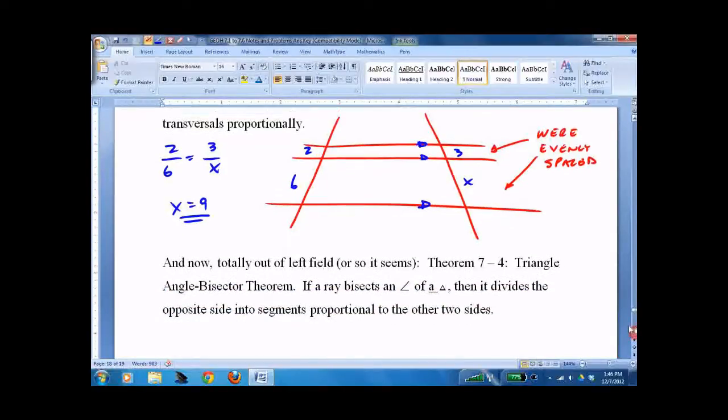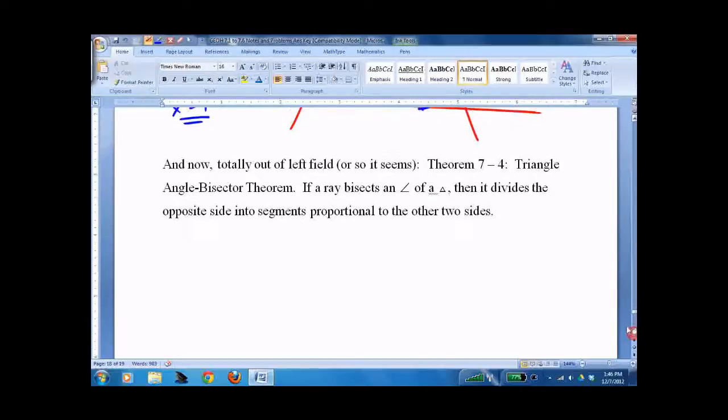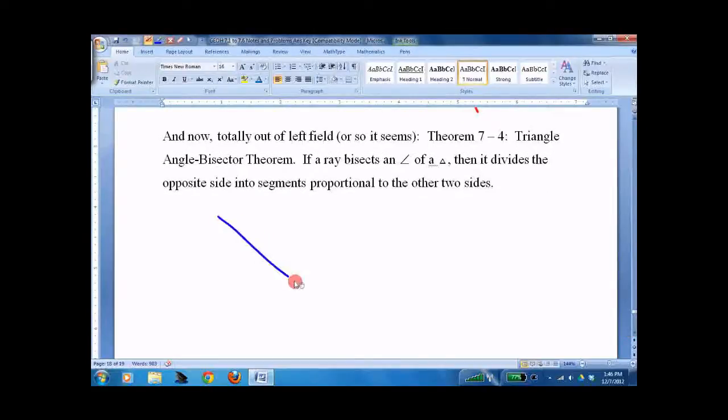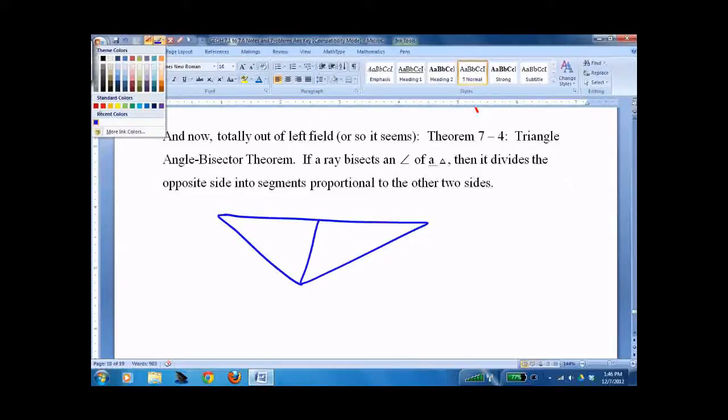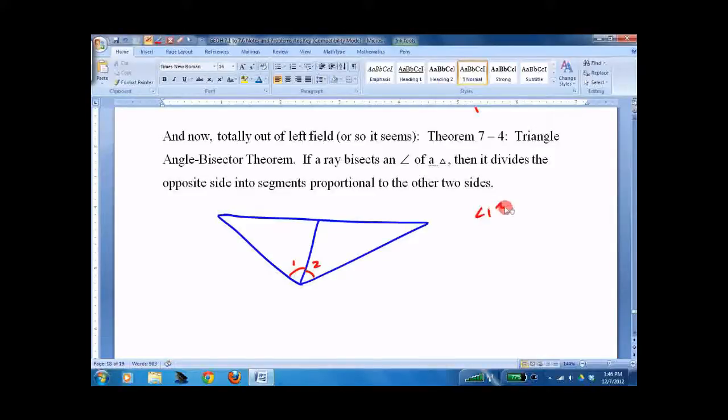This one is totally out of left field. Got a triangle here. And I split it with an angle bisector. These are not similar triangles. A question came up recently. Are they similar? No they are not. It's an angle bisector. So angle 1 is congruent to angle 2. Turns out it sets up proportionalities.